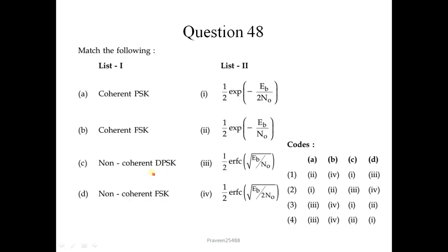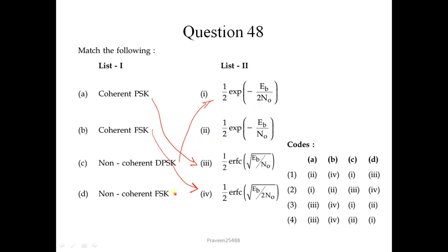Question number 48: match the following. Digital modulation techniques in list 1 with their corresponding bit error rate expressions in list 2. For coherent PSK, the BER expression is (1/2) erfc(√(2Eb/N0)). For coherent FSK, the expression involves Eb/(2N0). For non-coherent FSK, the corresponding expression is given. The correct sequence is 3, 4, 1, 2; the third option is the correct answer.